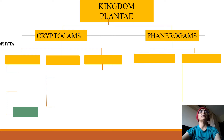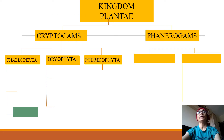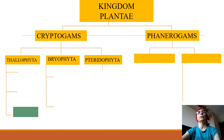Cryptogames are further subdivided into three groups: thallophyta, where the plant body is thallus-like; bryophyta, which has a dorsiventrally flattened plant body and is shade-loving; and ferns, which are pteridophytes. In both bryophyta and pteridophytes, they are sometimes grouped as archegoniatae because the female sex organ in both is called archegonium.